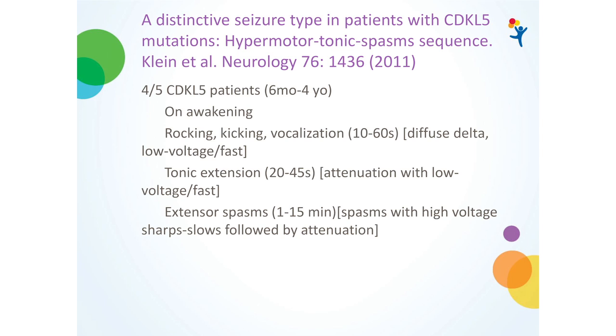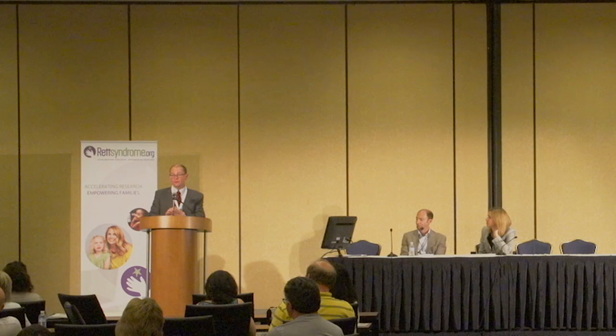This was followed by tonic extension lasting 20 to 45 seconds — somewhat rigid — with EEG showing attenuation with low voltage fast. Then followed by extensor spasms lasting 1 to 15 minutes, with high voltage sharps and slows, each followed by an attenuation.